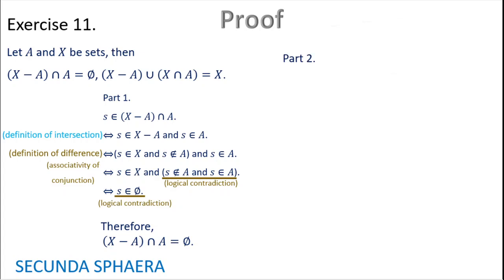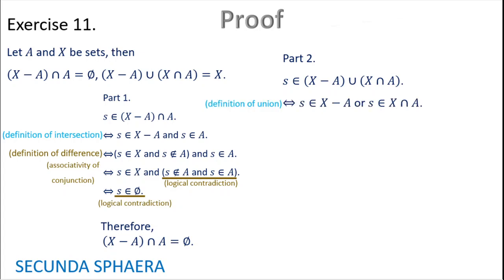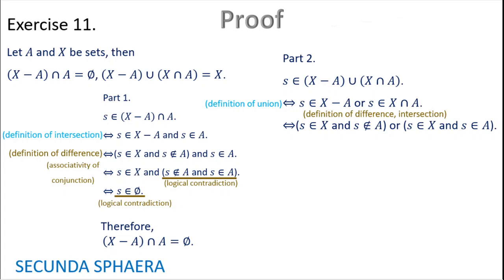Moving on to part two of exercise 11: it is required to prove that X without A union X intersection A equals X. This is again going to be done by equivalences. So S in X without A union X intersection A. By the definition of union, this is if and only if S is in X without A or S is in X intersection A. Using the definition of difference and intersection, this gives S is in X and S is not in A, or S is in X and S is in A.